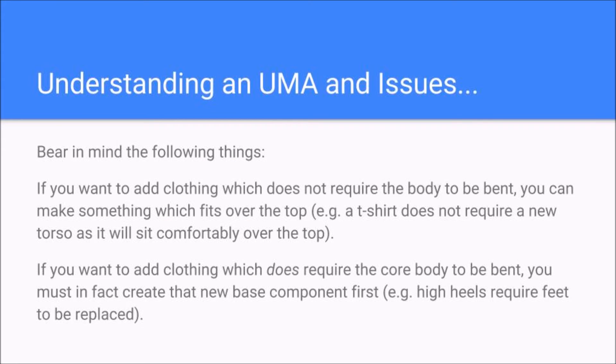Bear in mind a few things. That's our default shape for a man, for example. If we want to add clothing which doesn't require the body to be bent in any weird or wonderful way, you can make something which just goes over the top — we don't have to replace anything on that mesh. We can leave those slots as is. However, if you want to add something which requires the body to be bent, for example high heel shoes, or a mechanical arm which can't simply go over the top of an existing human arm, you would actually need to recreate that new base component first. If you were making a mechanical arm you would need to replace the entire torso. So bear that in mind — try not to do anything too advanced to begin with.